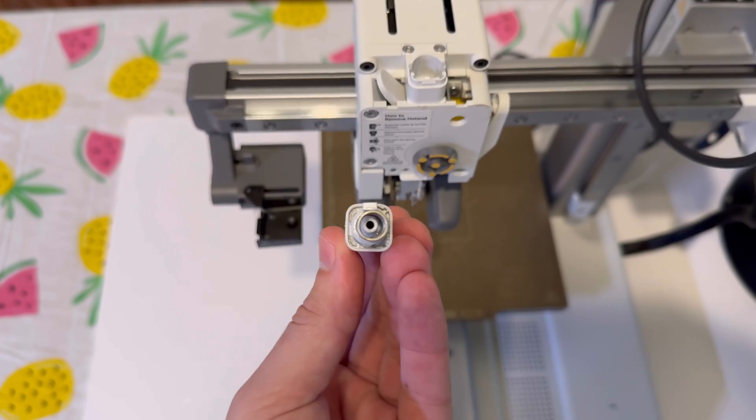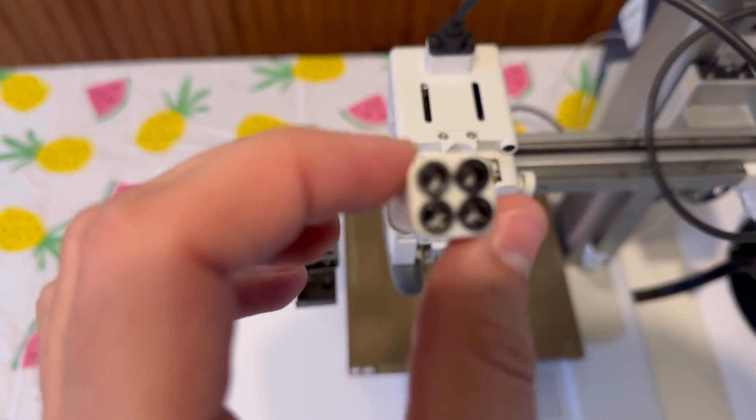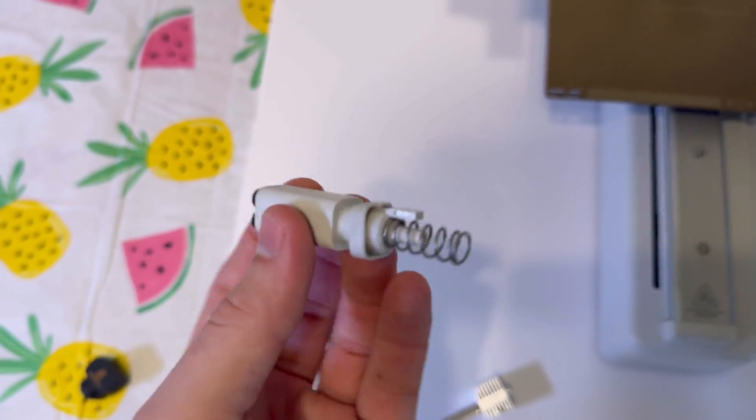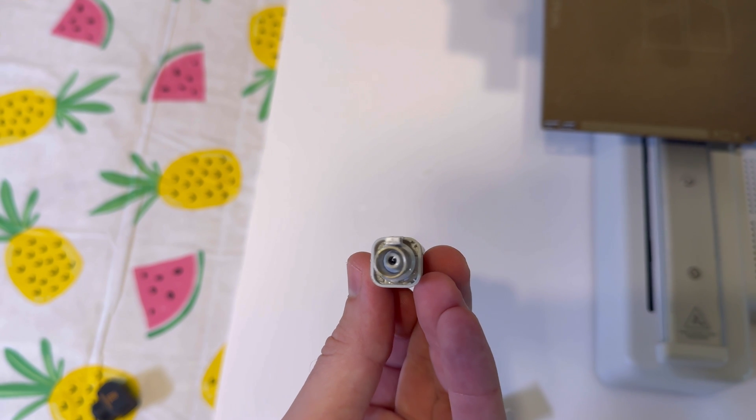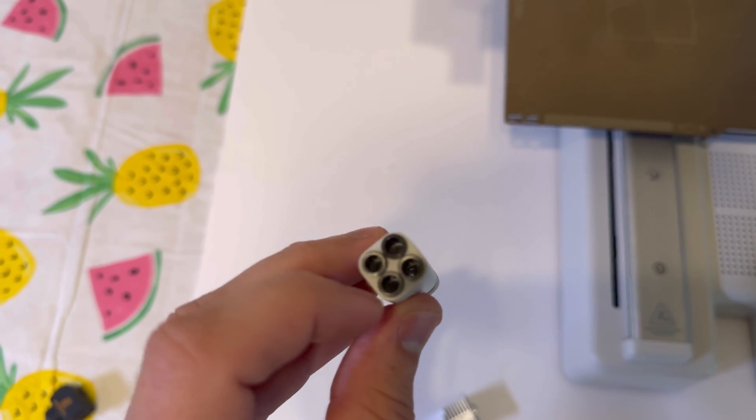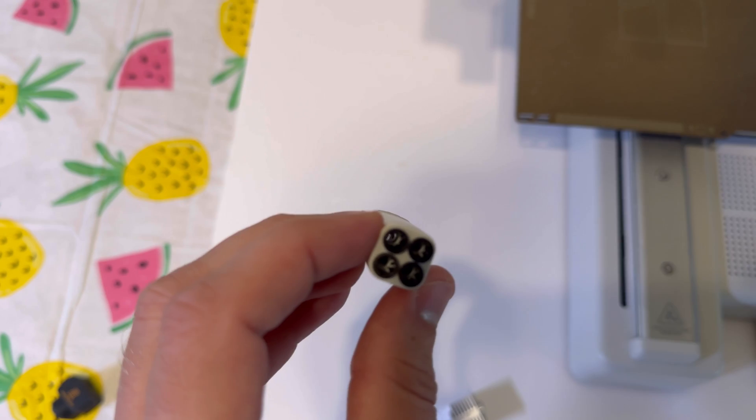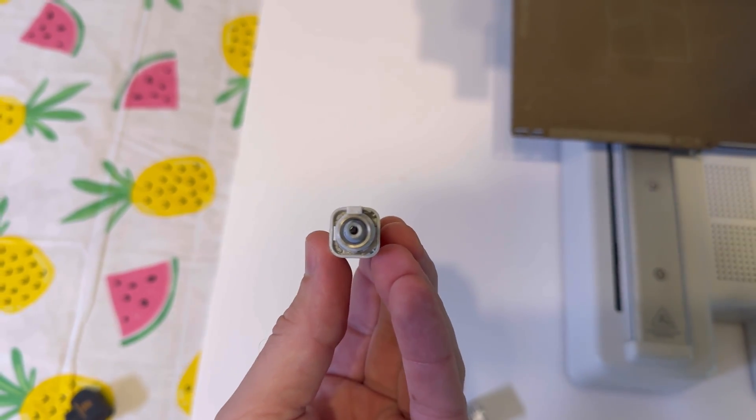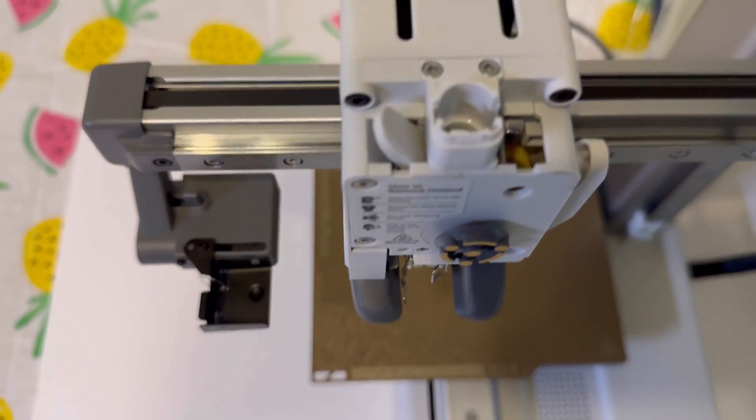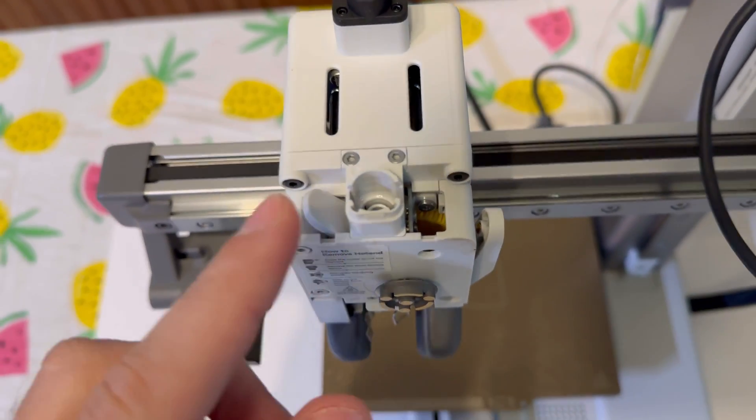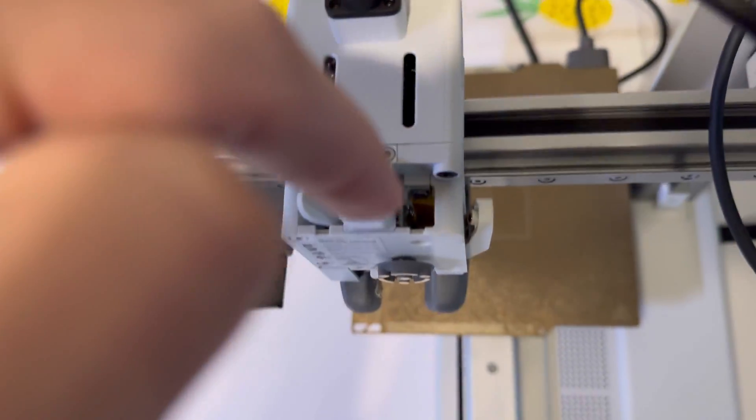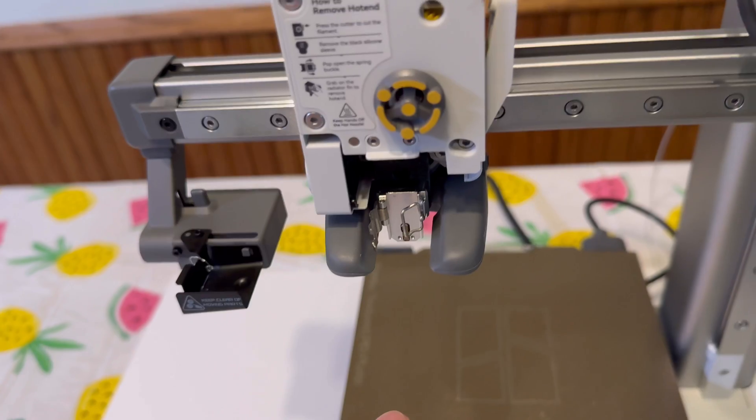All right so now that we have this little filament chamber open what we can do here is look through here. Try to see if the filament is in there and what you can do here is you can run a piece of filament through each one of these holes just to make sure they're all clear. And if you can't see a clog in here then chances are it's probably in this next piece. What you can try to do is run a piece of filament all the way through there which we'll do right now.